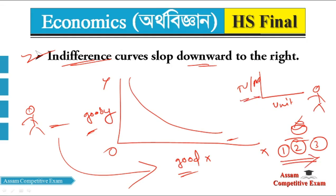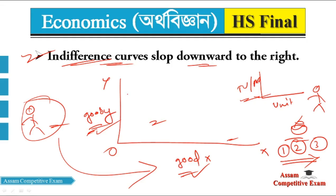Total utility or marginal utility — so the indifference curve shows a consumer consuming two goods, where the curve represents their satisfaction. Each point on the curve indicates the same level of satisfaction for the consumer. Is that clear?